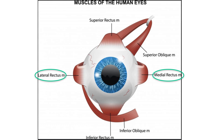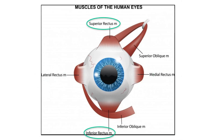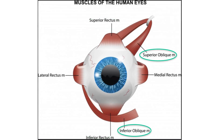For example, if the external rectus muscle of the right eye contracts, its ipsilateral antagonist, the internal rectus muscle of the right eye, will relax. The internal and external rectus of either eye are obviously antagonistic. The superior rectus muscle and the inferior rectus muscle are also considered antagonists since their main actions, in the primary position, oppose each other, although both muscles are also adapters. Similarly, the two oblique muscles of the same eye are antagonists.